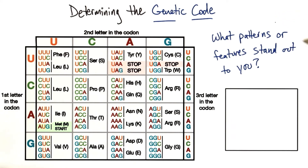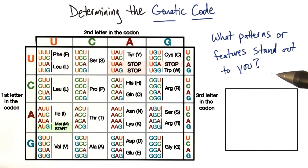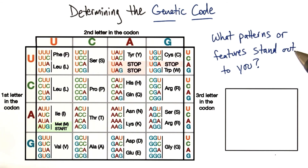What patterns or features stand out to you about this genetic code? Is there anything interesting that you notice? I want you to use the text box here to describe any kind of response you have that might answer this question. Don't worry about getting this right or wrong — I just want to see what you pick up on. You could always go to the form and see what other people think about the genetic code too.